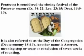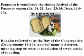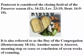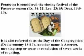Pentecost is considered the closing festival of the Passover season, Exodus 34:22, Leviticus 23:15, and Deuteronomy 16:9–10. It is also referred to as the Day of the Congregation, Deuteronomy 18:16. Another name is Atsaret, meaning 'stop,' 'cease,' or 'conclusion of seven weeks of counting.'